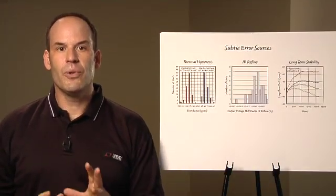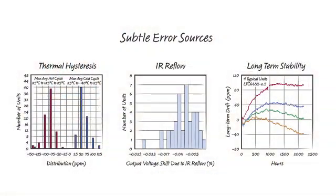When you push a reference to the limit of its performance, a few subtle effects can increase your error budget. These effects include output voltage shifts due to thermal effects, such as IR reflow and thermal hysteresis, as well as long-term drift of the IC components. Understanding these can be critical to the success of your product.